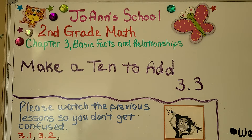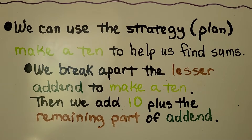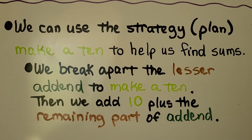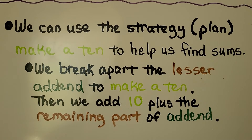Lesson 3.3: Make a 10 to add. We can use the strategy — that's a plan — 'make a 10' to help us find sums. We break apart the lesser add-end to make a 10, then we add 10 plus the remaining part of the add-end.